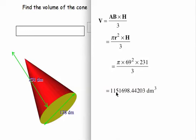And that gives us this nice big huge number, 1,151,698.44203, and this is rounded by the way, decimeters cubed. So you want to round to 5 decimal places.